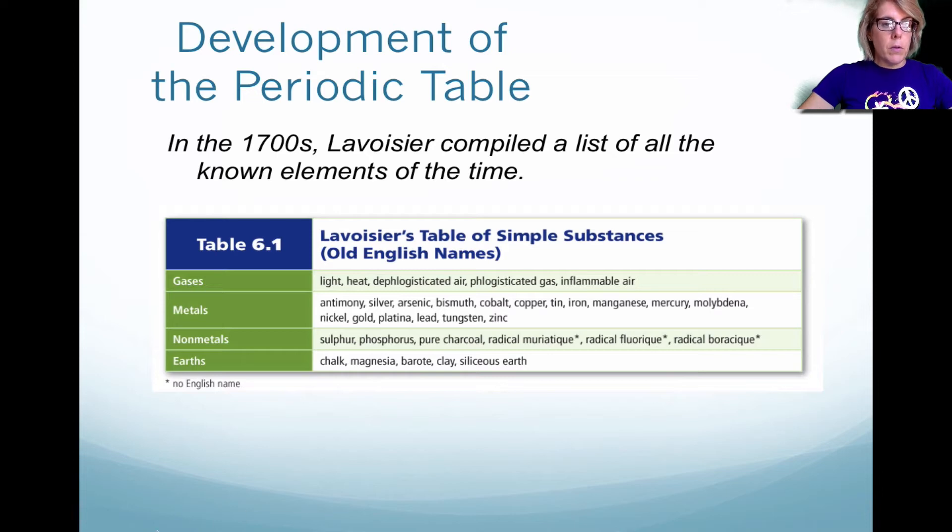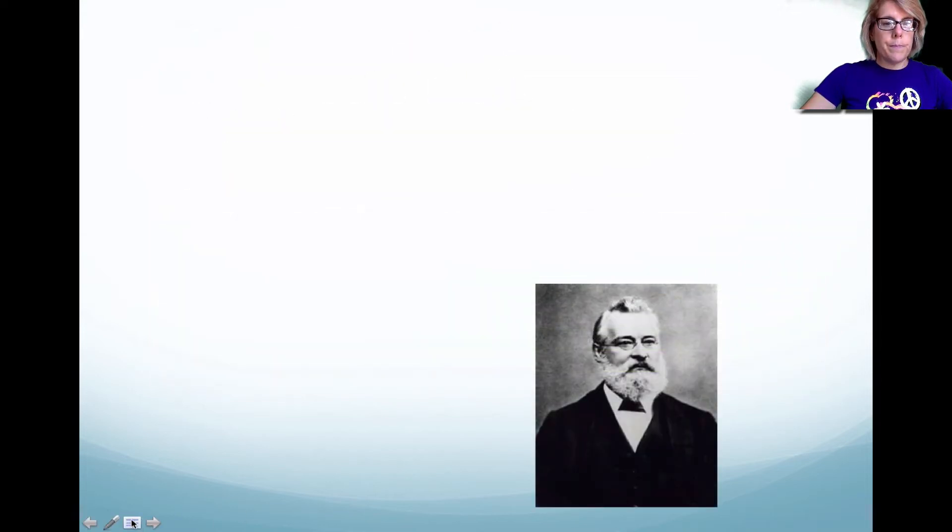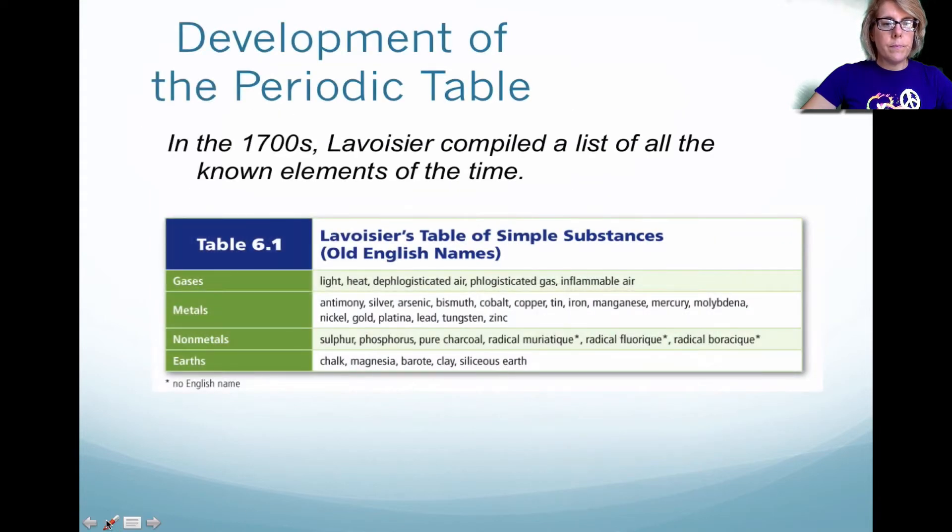Now, if you look in this table, some of the elements actually don't look right. And I'll just show you, light and heat, at the time, they didn't know that that was not matter. We know now that it is. And then he talked about dephlogisticated air. They did a lot of experiments with mercury oxide. So phlogiston is a version of mercury oxide.